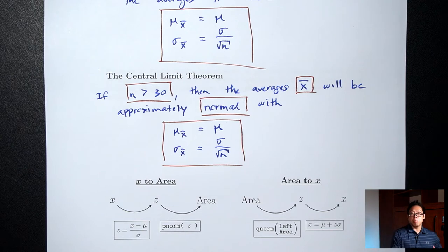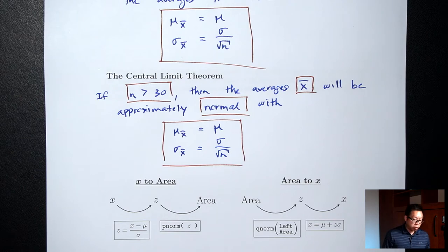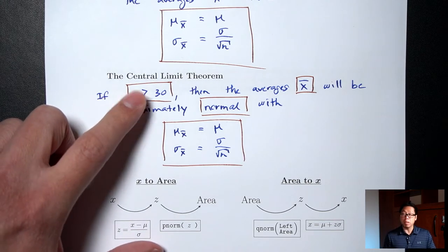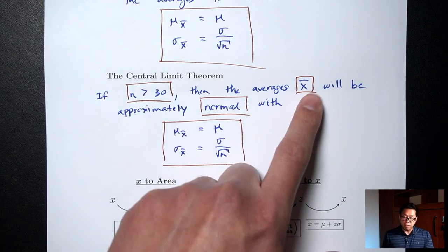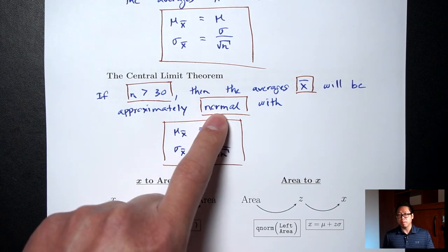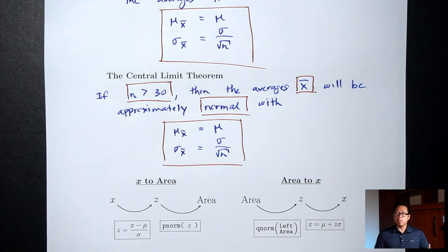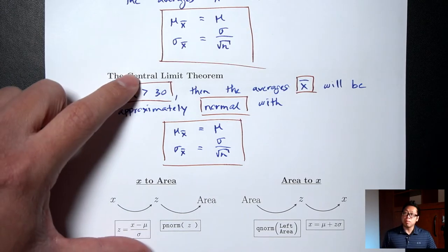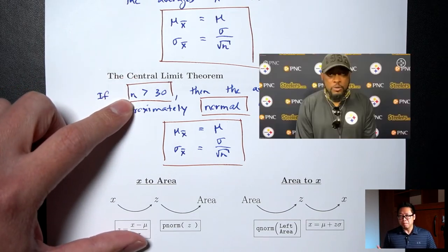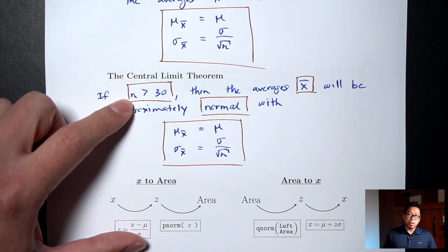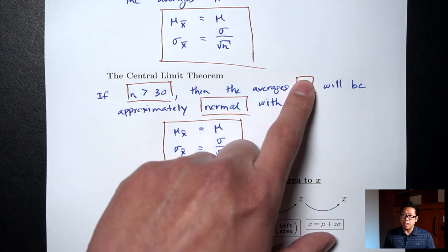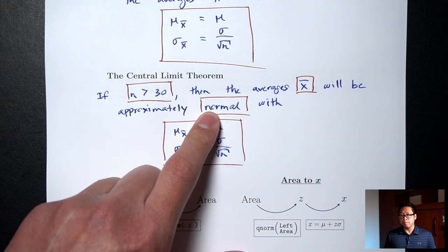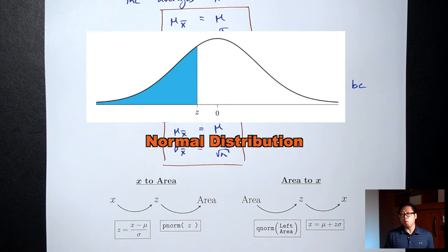That answers the question from the beginning of the lecture: what do you do when your distribution is not normally distributed? The answer is, as long as you pick a sample size bigger than 30 and look at the averages, the distribution will be normal. Most of the time in statistics we don't know what the population distribution looks like, and the central limit theorem says: who cares? As long as sample size is bigger than 30 and you look at the averages, the distribution will be normal. That's why the normal distribution is so important in statistics.